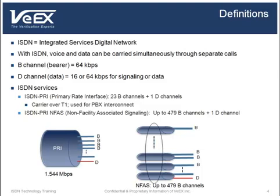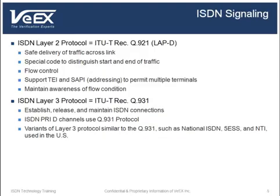The T1 extended super frame framing structure is typically used in PRI applications. For a single T1 ISDN-PRI circuit, the 23 B-channels are arranged to take the first 23 channels of the T1, and the D-channel is at channel 24. Link access protocol on the D-channel, also known as LAPD, is the Layer 2 protocol used in ISDN.